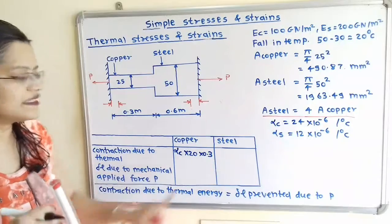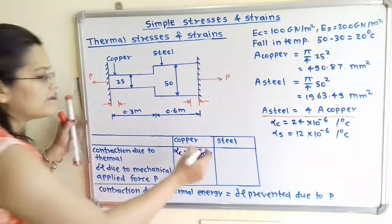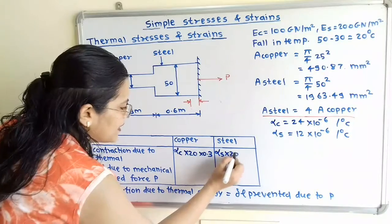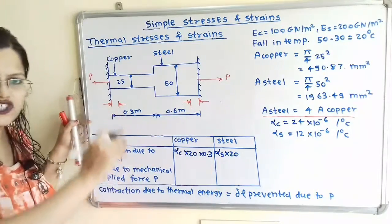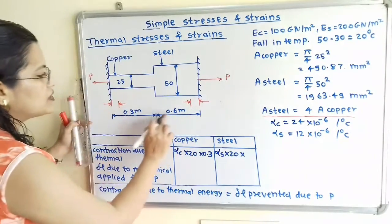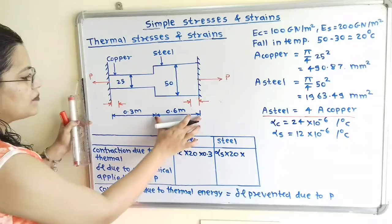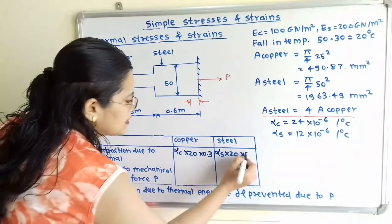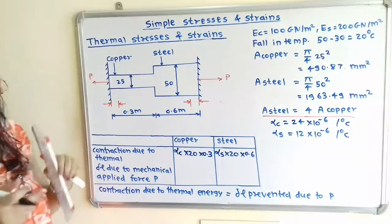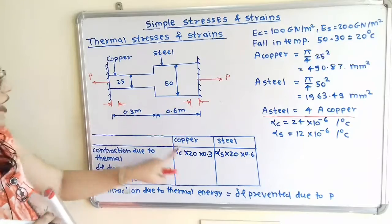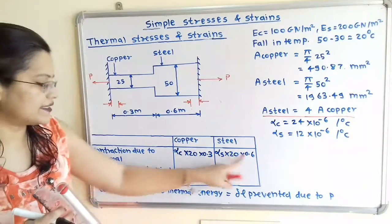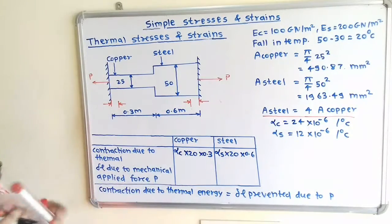For steel material, we write α_S × 20 × L_S, where the original length of the steel bar is 0.6 m, giving 12·α_S. Values are mentioned in meters so we take them as is.